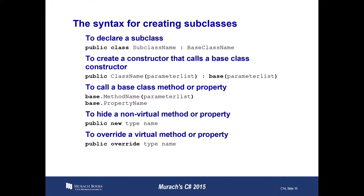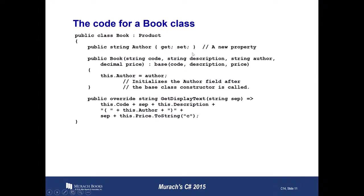Here's the syntax for creating subclasses. If we go back to a form we create, we always have a public class with our form name, and it extends — using a colon in C# rather than the 'extends' keyword in Java — the base class name. Using our book and software analogy, we would write 'Software : Product', meaning it extends Product. The next slide shows the Book class that extends Product, along with its constructor, which takes in everything a Product takes in as well as the author.